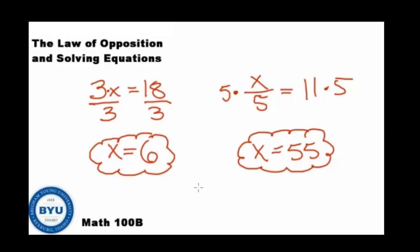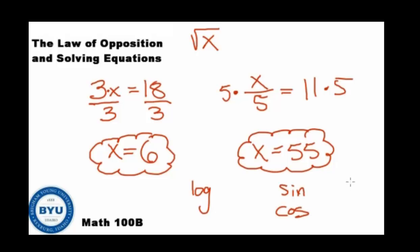There are lots of other operations — in fact, all math is about opposites. There are opposites of exponential functions, opposites of square root functions, things called logarithms. You can look at your calculator and see all these operations. There are opposites for sine, opposites for cosine. All math is about understanding the law of opposition — what do we do to undo an operation so that we can find the true value of the variable?